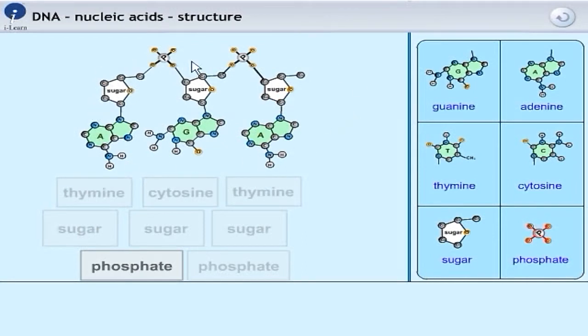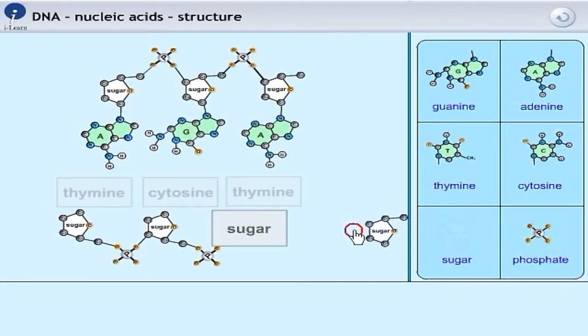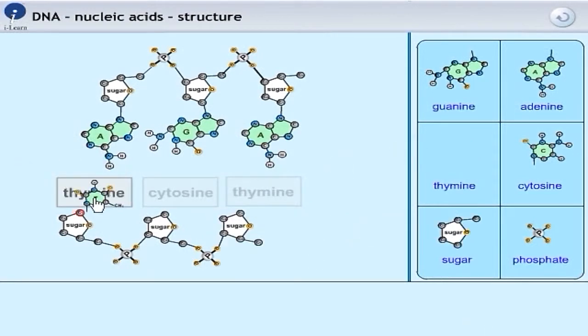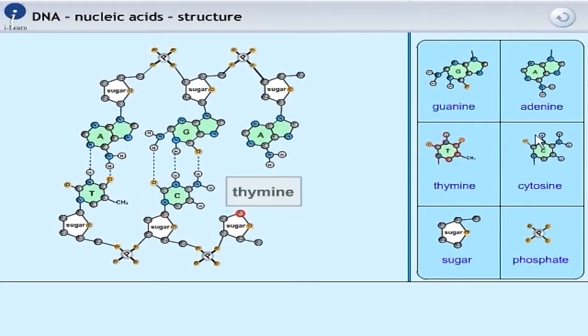I've drawn one bit of one strand of DNA and now I'm going to draw or assemble another strand. Again, it needs phosphates linked together by sugars. And then to each sugar is attached a base with these particular names.